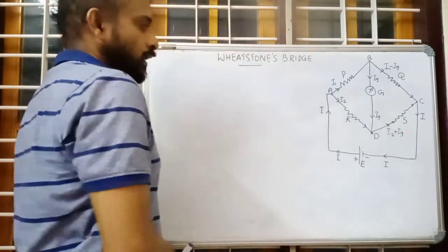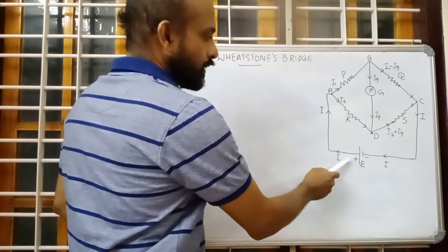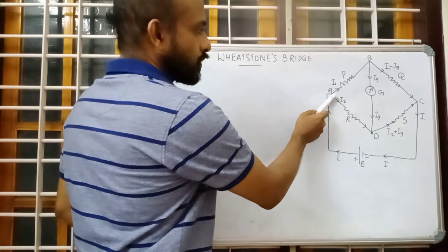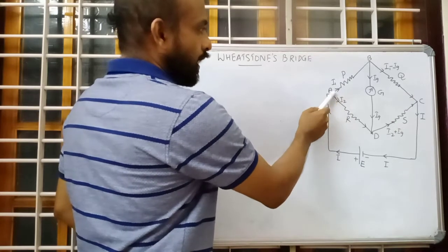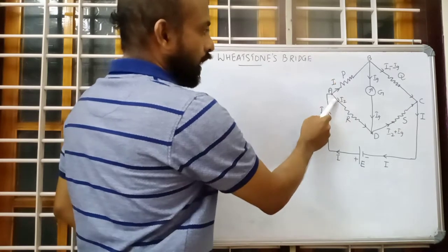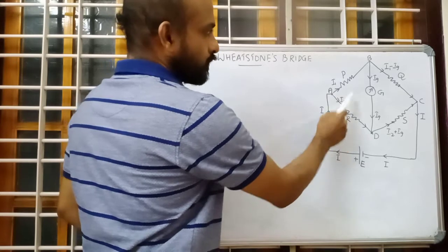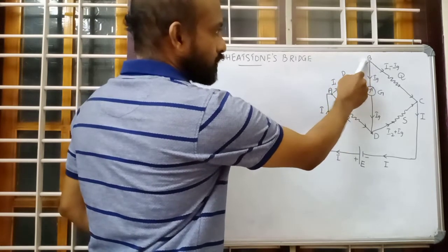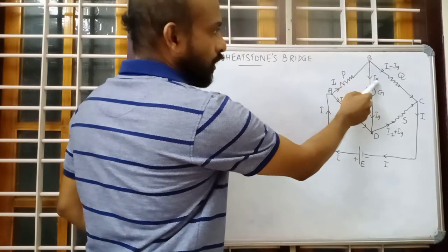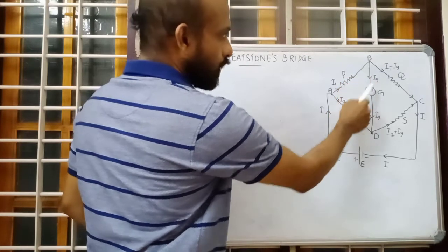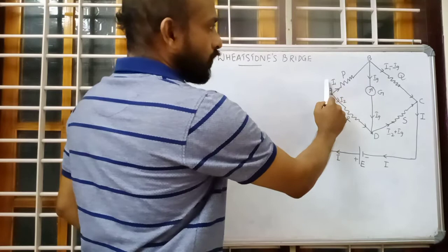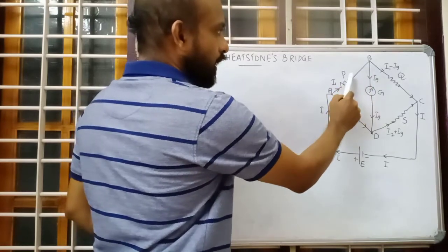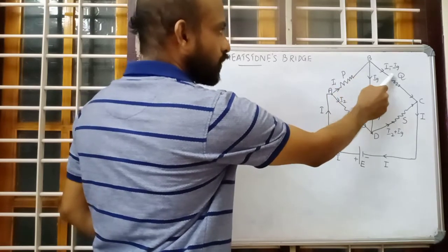Now I will explain the division of current. From the cell, I is the current flowing. This current I divides at a junction — I1 is flowing through P and I2 is flowing through R. Now I1 reaches a point where it has two options to flow. Some current Ig flows through the galvanometer. The remaining current is I1 minus Ig, flowing through resistance Q.